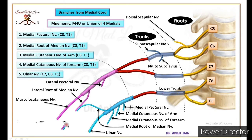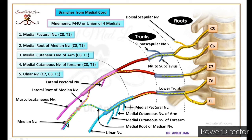Ab median nerve ki root value ki baat karte hai. Median nerve is formed by the union of medial root of median nerve and lateral root of median nerve. That means lateral cord and medial cord dono hi median nerve ke formation mein help kar rahe hai. Means median nerve receives signals from all the roots of brachial plexus. Isliye median nerve ki root value C5, C6, C7, C8 and T1 hogi.